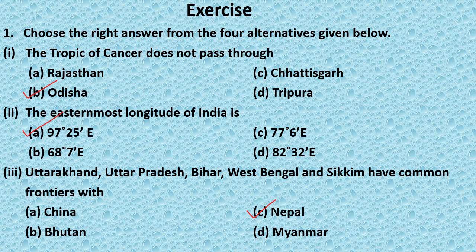Question 2: The easternmost longitude of India is — Option A: 97°25'E, Option B: 68°7'E, Option C: 77°6'E, Option D: 82°32'E. Answer: Option A, 97°25'E.